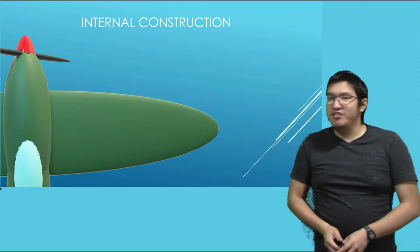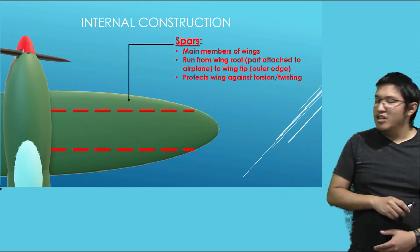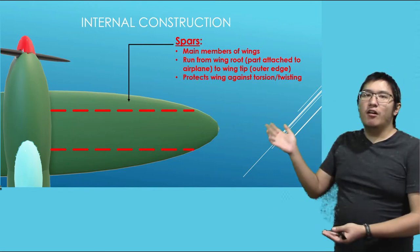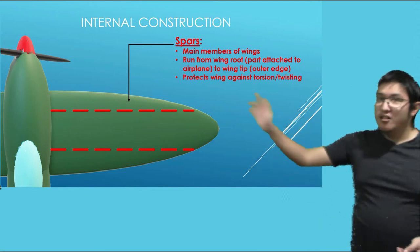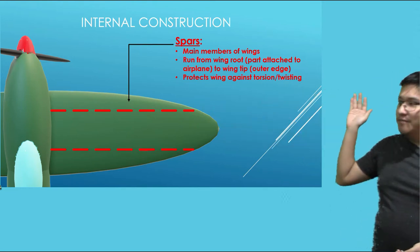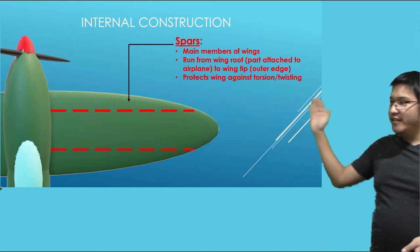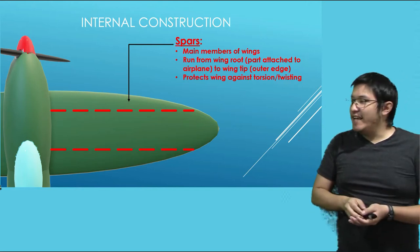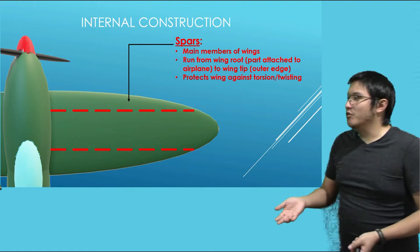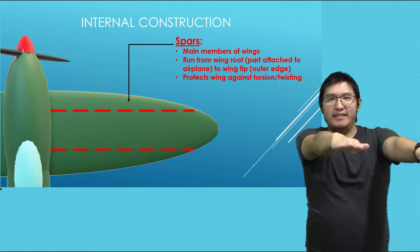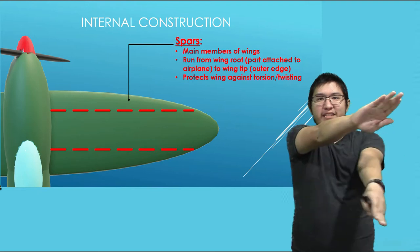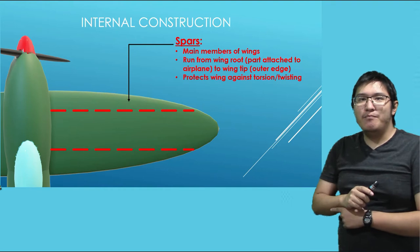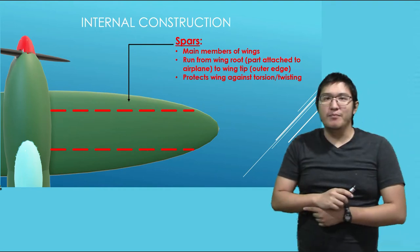Now, the internal construction of the wing. The first thing to know about how the wing is built is what we call spars. These spars run lengthwise throughout the wing, from the wing root to the wing tip. They protect the wing against any sort of torsion or twisting. Spars are known as the main members of the wing — this is very important to know.